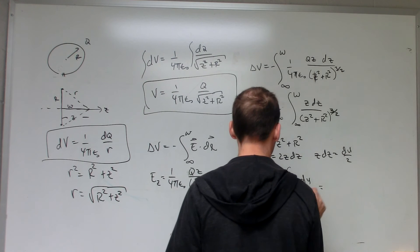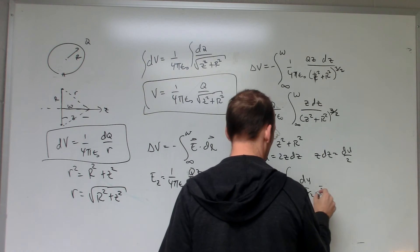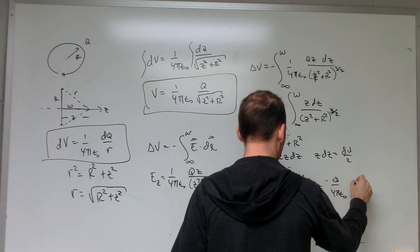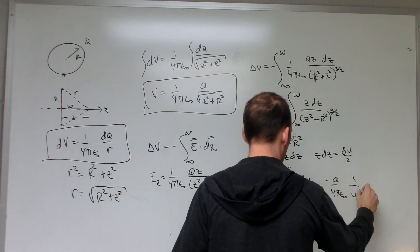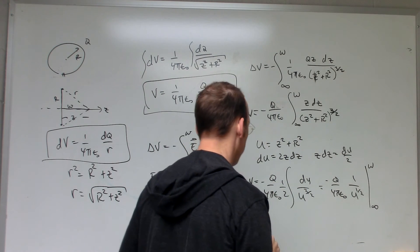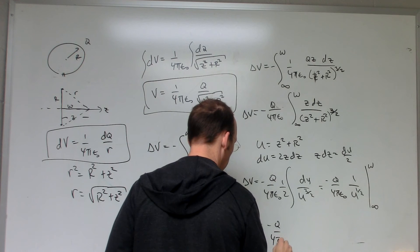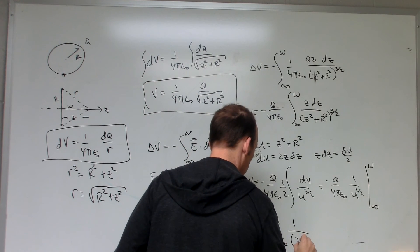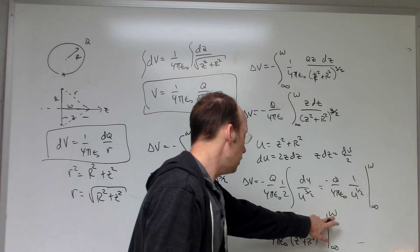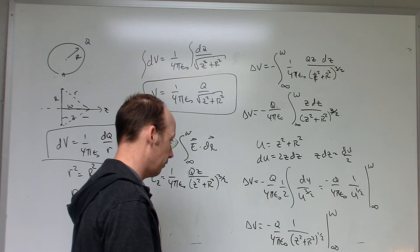This is u to the negative three halves. So if I integrate this, I'm going to get u to the one half divided by one half, so the one halves cancel. So I get negative Q over 4π epsilon not, 1 over u to the one half from infinity to w. Now I can put back in for my u, and I get delta V equals negative Q over 4π epsilon not, 1 over z squared plus R squared to the one half from infinity to w.